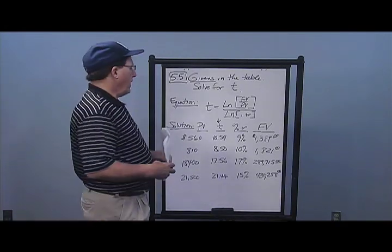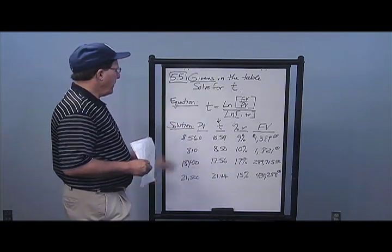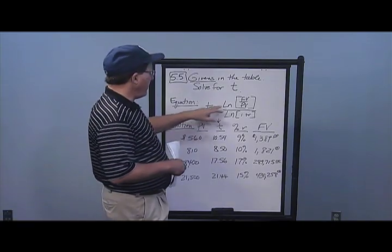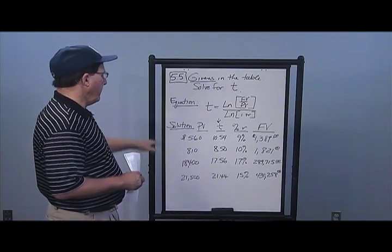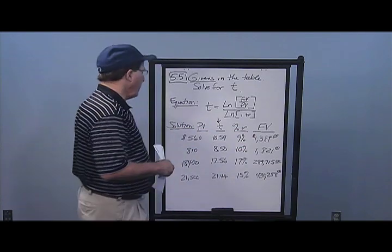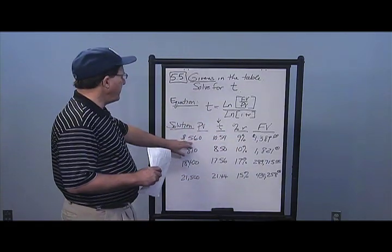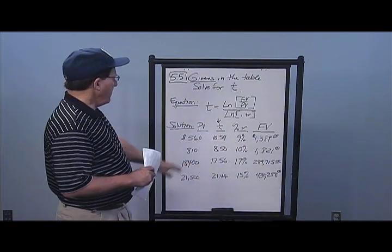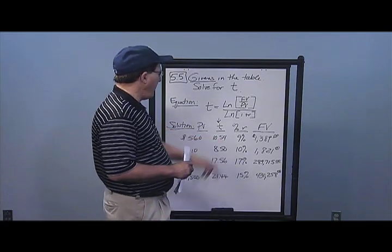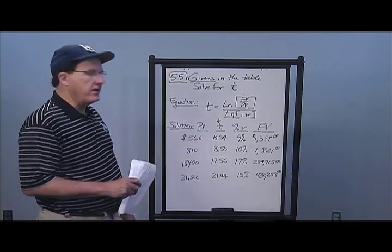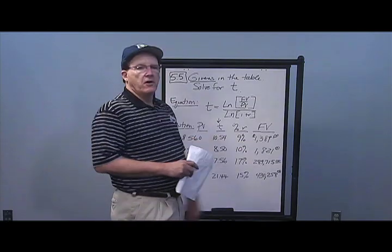In problem number five, we're given the givens in a table and this time solving for T, the number of periods. The formula is: T equals the natural log of (FV / PV) divided by the natural log of (1 + R). In the first case, ln(1,389 / 560) divided by ln(1.09) gives a time period of 10.54 years. You can verify: 560 times (1.09) to the 10.54th power should return $1,389.